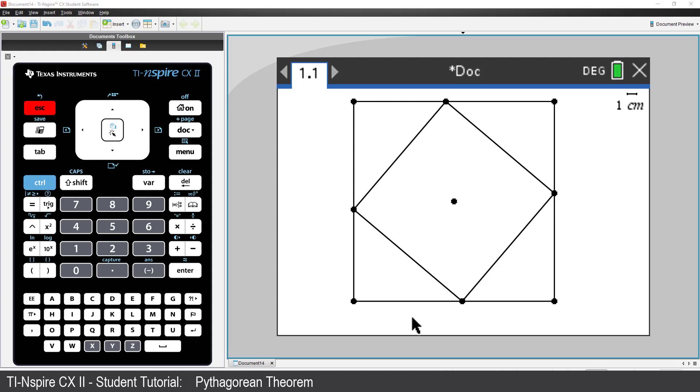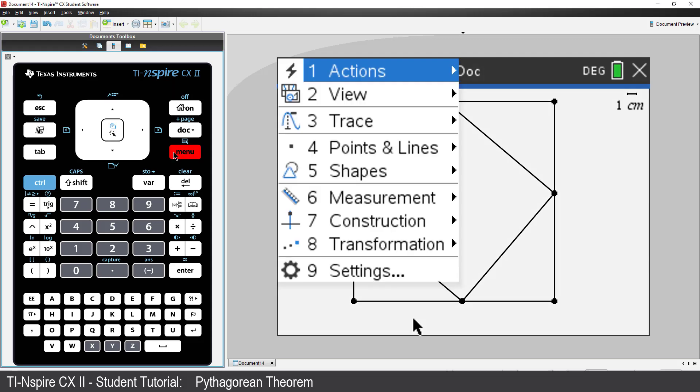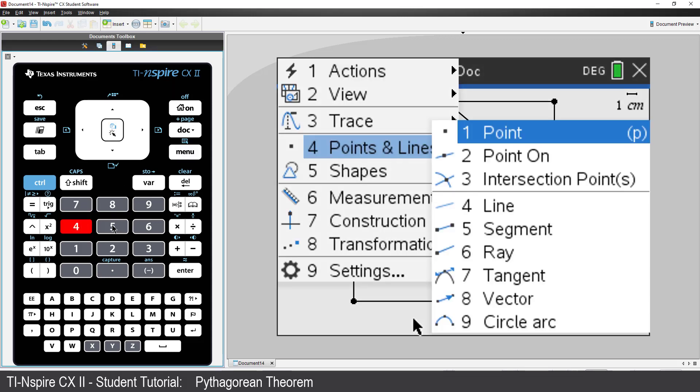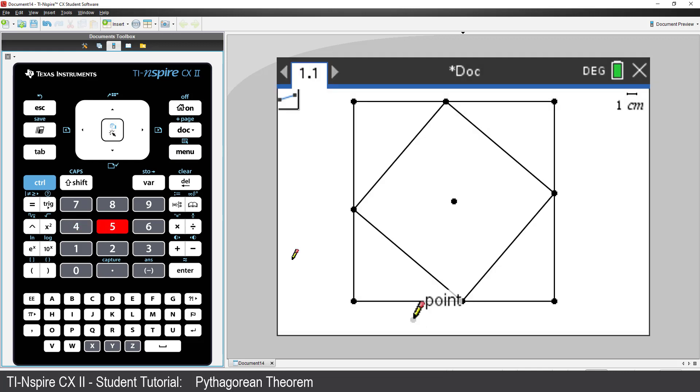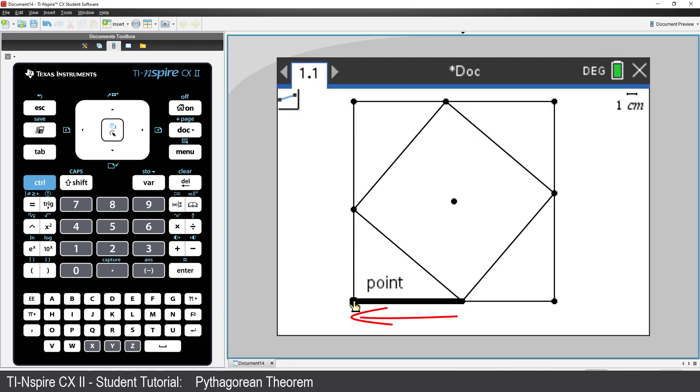The final part of our construction is to create line segments which we can use to label. Press Menu, select Points and Lines, then Segment. We'll create 3 line segments corresponding to each side of the 4 congruent triangles. Now press Escape to release the Segment tool.